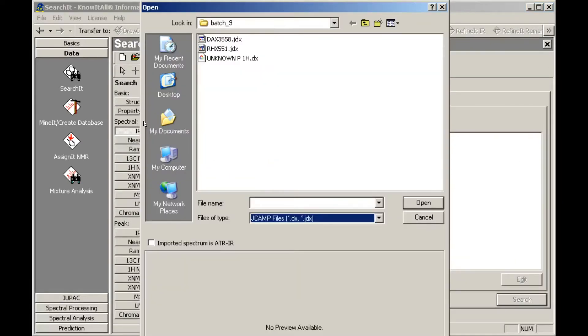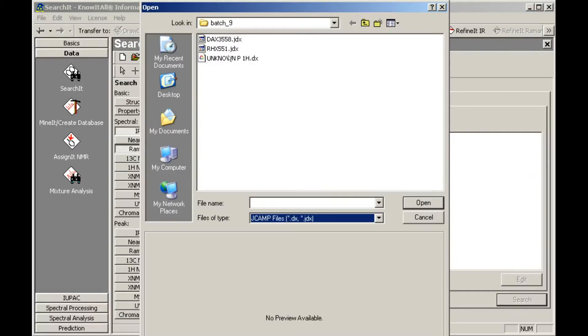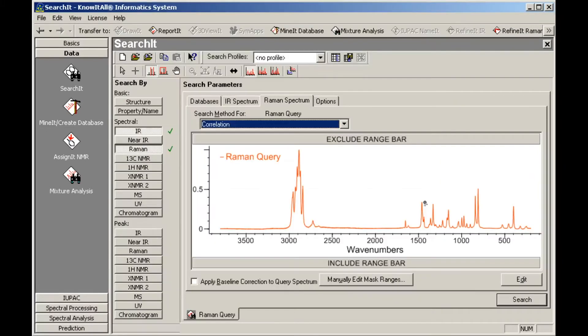We load an IR spectrum from the unknown sample, followed by a Raman spectrum from the same sample. Once both spectra have been loaded, click Search.